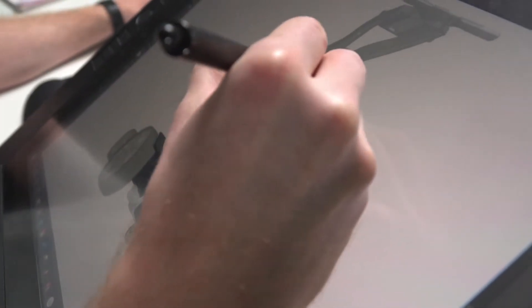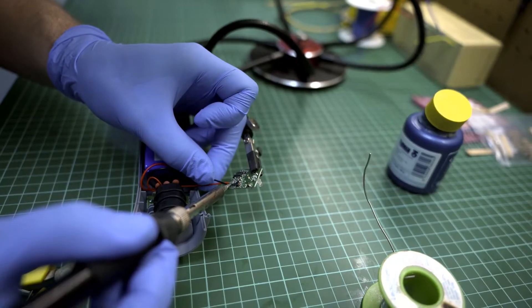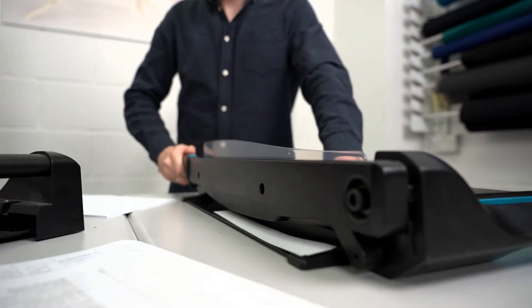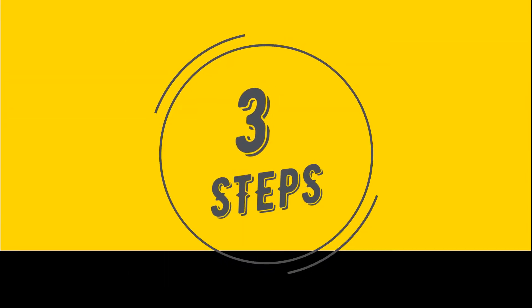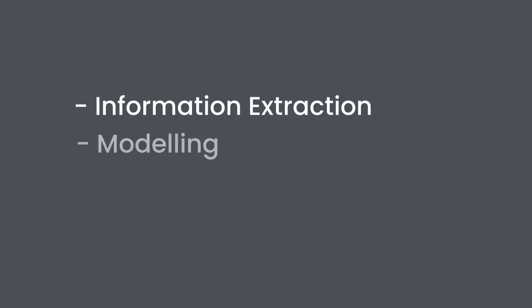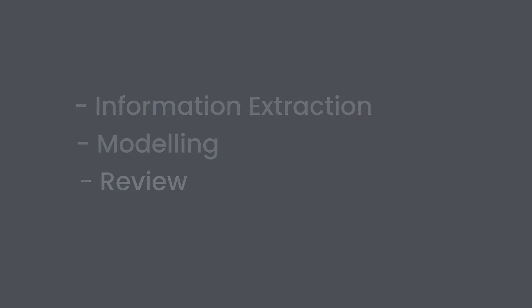The reverse engineering process is specific to the object on which it's being performed. No matter the object type, there are three general steps common to all reverse engineering efforts: information extraction, modeling, and review.